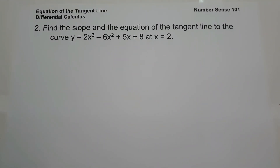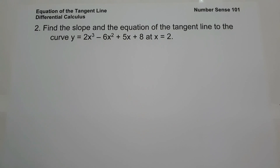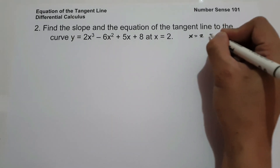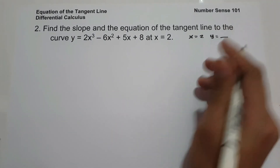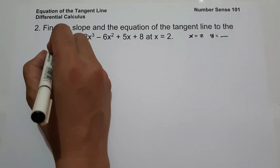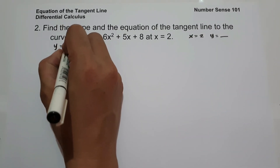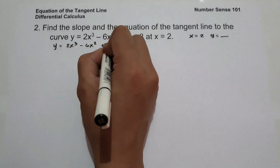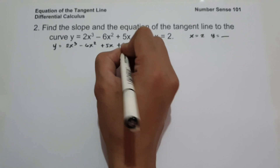Number 2: find the slope and the equation of the tangent line to the curve y equals 2x cubed minus 6x squared plus 5x plus 8 at x equals 2. Let us identify first the value of x, which is 2, and find the value of y by substituting x into the equation: y equals 2x cubed minus 6x squared plus 5x plus 8.